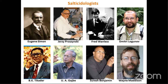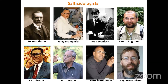Among prolific salticidologists, Eugene Simon described more than 3,000 species, most of which are still valid today. Dr. Jerzy Proszynski, a Polish arachnologist, specialized in salticids and maintains a database. He worked on several collections from India deposited in various museums abroad — the Hungarian Museum, California Academy of Sciences, and other places. He illustrated many species known only from original descriptions, and based on his drawings we can recognize a lot of species we encounter today.